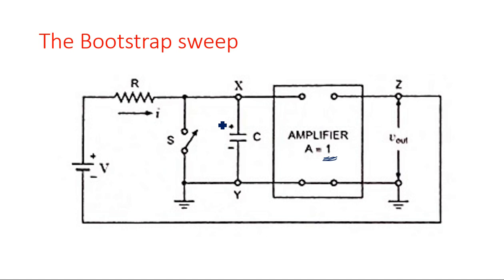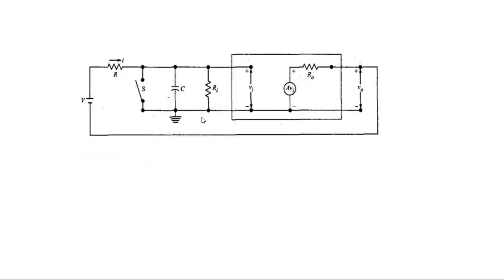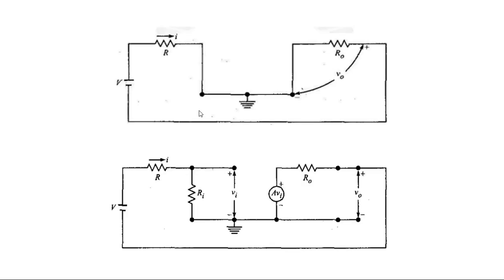This circuit is going to be converted into a Thevenin's model, similar to what we have done in the previous case. This is the equivalent circuit for the bootstrap circuit. These are the models we encountered when designing the equivalent circuit, and this is the equivalent circuit of the bootstrap when t is equal to infinity.